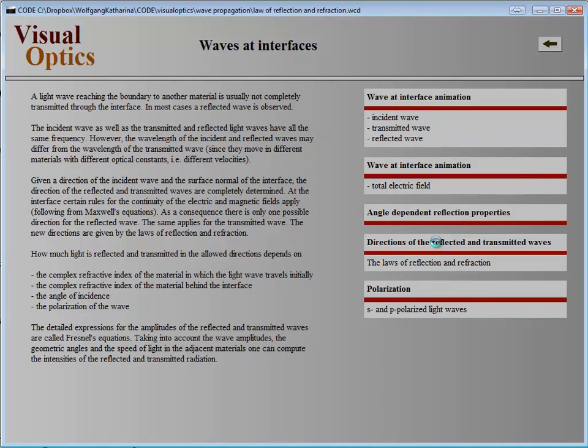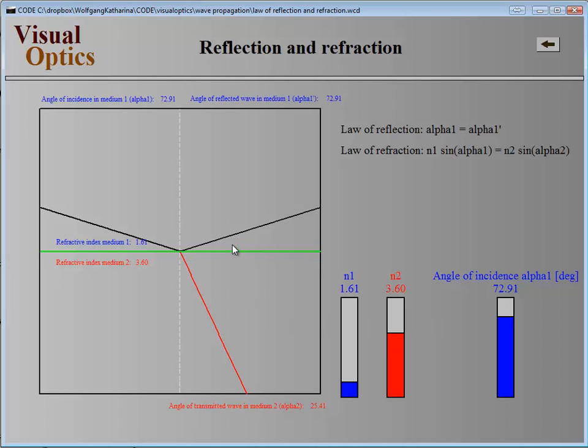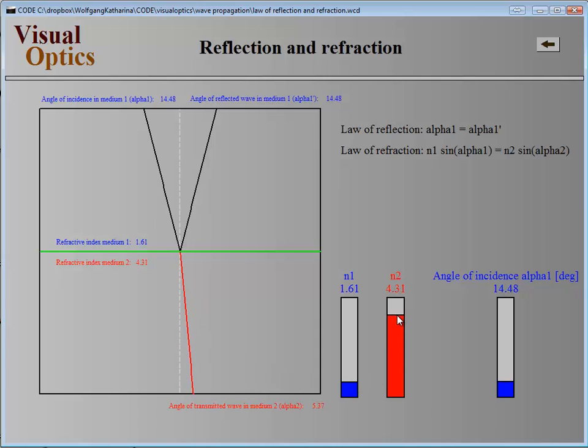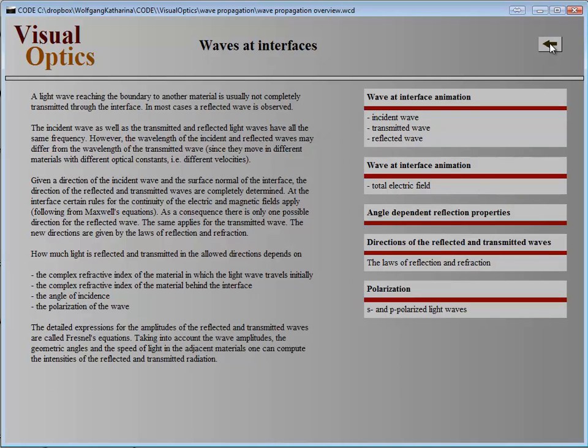The same holds for the laws of reflection and refraction, where you can change the angles and see where the reflected light goes and where the transmitted beam goes. You can change the refractive index values and see how that influences the propagation directions. This way, you can quickly learn how light waves travel through materials.